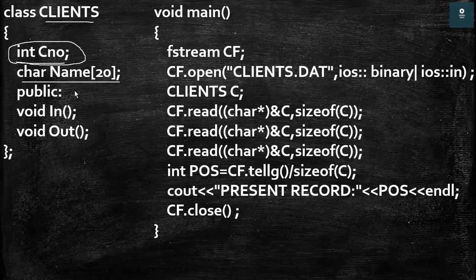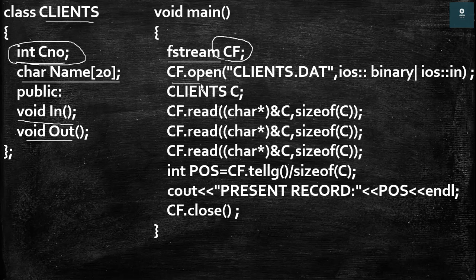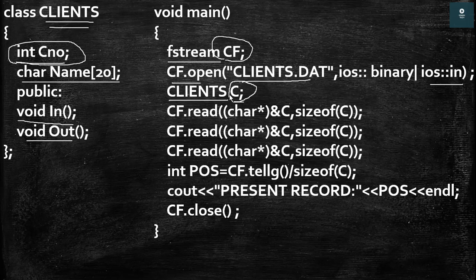In the public section we have two functions whose names are 'in' and 'out'. In the main function, the first statement is a declaration of a stream whose name is 'cf'. This cf stream will be used for opening the file. Then we are opening the file using the open function and the name of this file is 'clients.dat', and we are opening the file in input mode. Then we are creating an object of the clients class, because in this program we are reading objects from this file. Therefore to read the objects we have to create the object first, and this 'c' object will be used for reading the objects from the file.